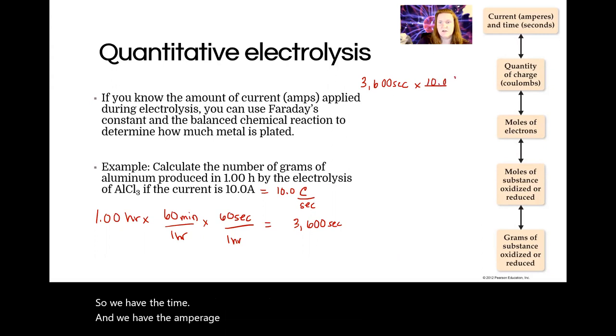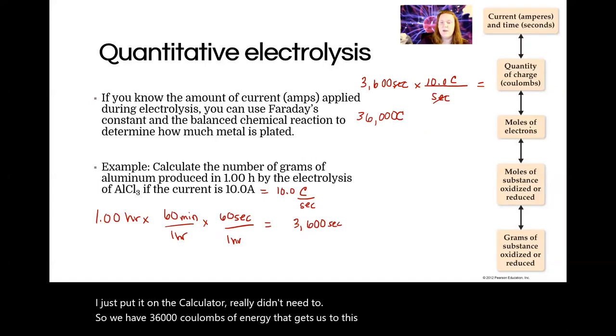And we have the amperage. So 10 Coulomb per second. So these get multiplied together and, of course, seconds cancels. I just put that on the calculator. I really didn't need to. Okay. So we have 36,000 Coulombs of energy. That gets us to this box. We can figure out with Faraday's constant, okay, how many moles of electrons that will be equivalent to.